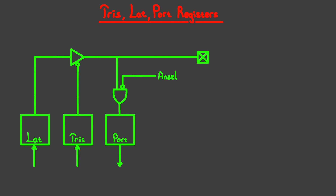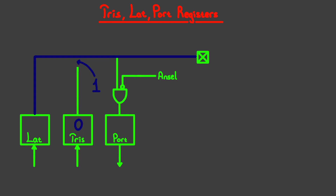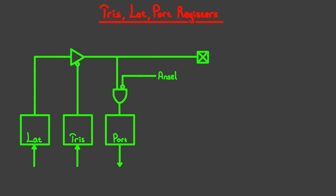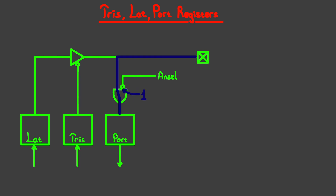The TRIS bits are used to configure a pin as input or output because the TRIS bit can isolate the output from the LAT bit by turning the tristate buffer off, which makes it an input. The input here is inverted. If the TRIS bit is 0 this inverted input becomes 1, which enables the tristate buffer and connects the LAT bit to the output, making it an output pin. It's inverted like this so that putting 0 makes the pin output and putting 1 makes it input — easy to remember since 0 resembles the O in output and 1 resembles the I in input. The port bit reads the state of the pin via an AND gate, whose output is written onto the port bit which you can read in your code.